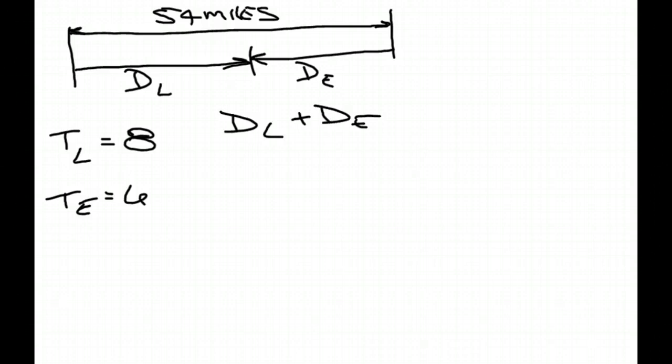So, DL plus DE equals 54. What am I going to replace DL with? RL times TL. So, let's start filling in with what we've been knowing. Distance equals rate times time. And distance here equals rate times time. I just changed into RTs instead of Ds.